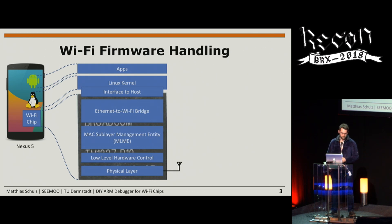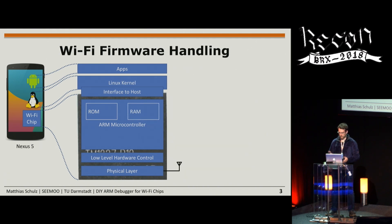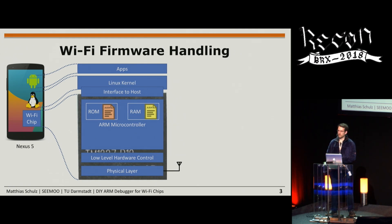If you want to learn more about Wi-Fi chips or change the firmware running on them, it makes sense to understand how the firmware works. The ARM microcontroller in the chip has two memories: a read-only memory (ROM) and a read-writable RAM. Part of the firmware is stored in ROM, another part is loaded by the driver into RAM. After the chip starts, it executes firmware from ROM and can call functions from ROM. You can modify the RAM firmware to add new functionalities.